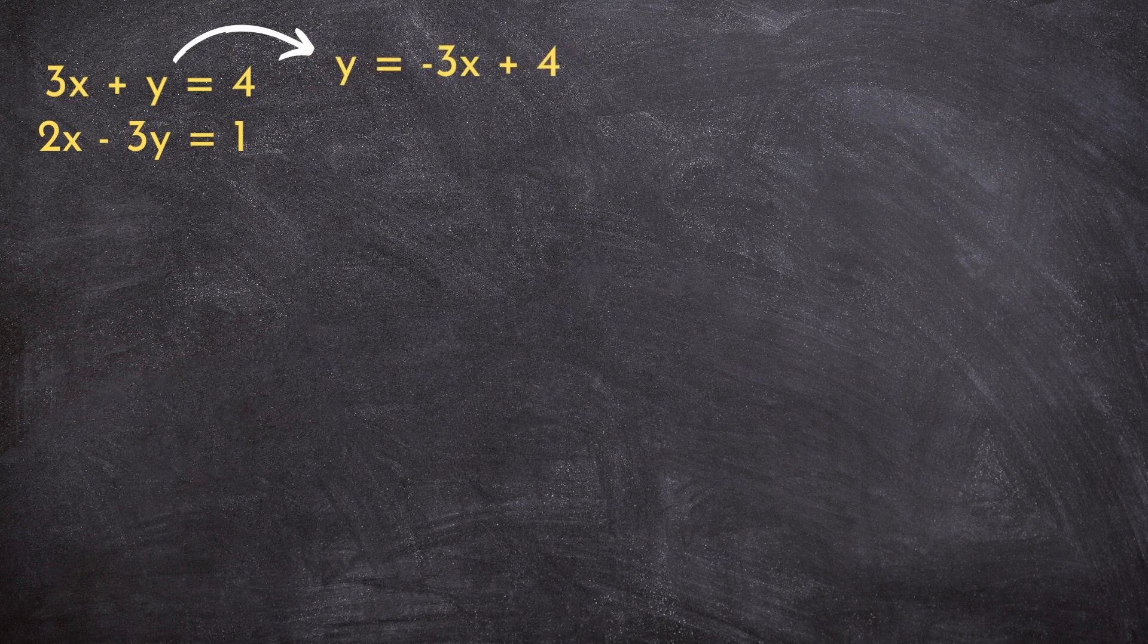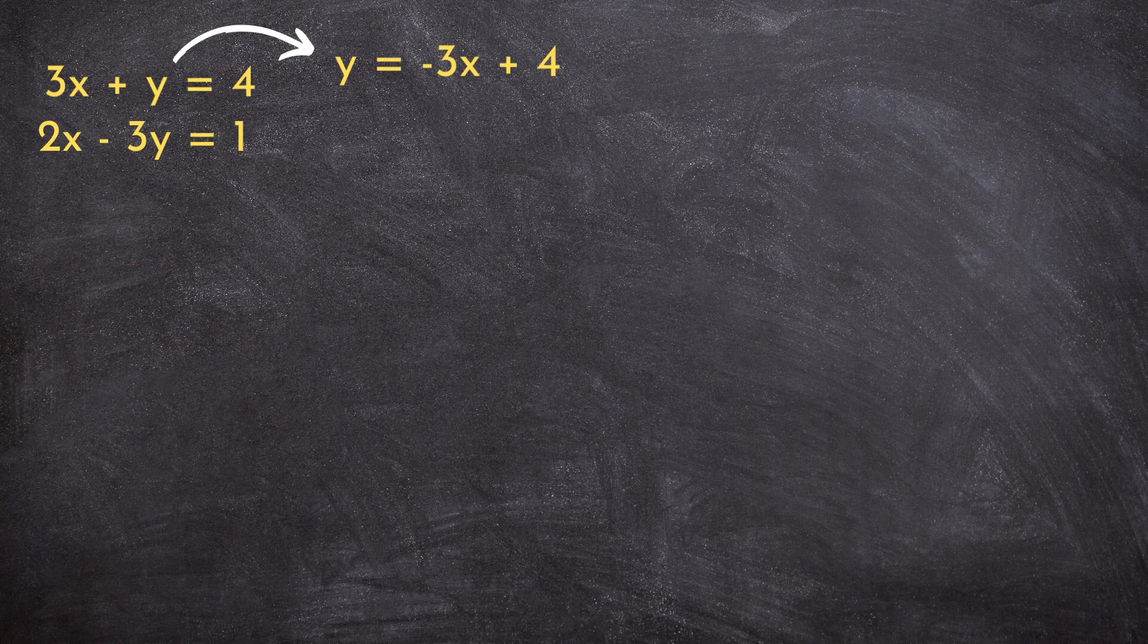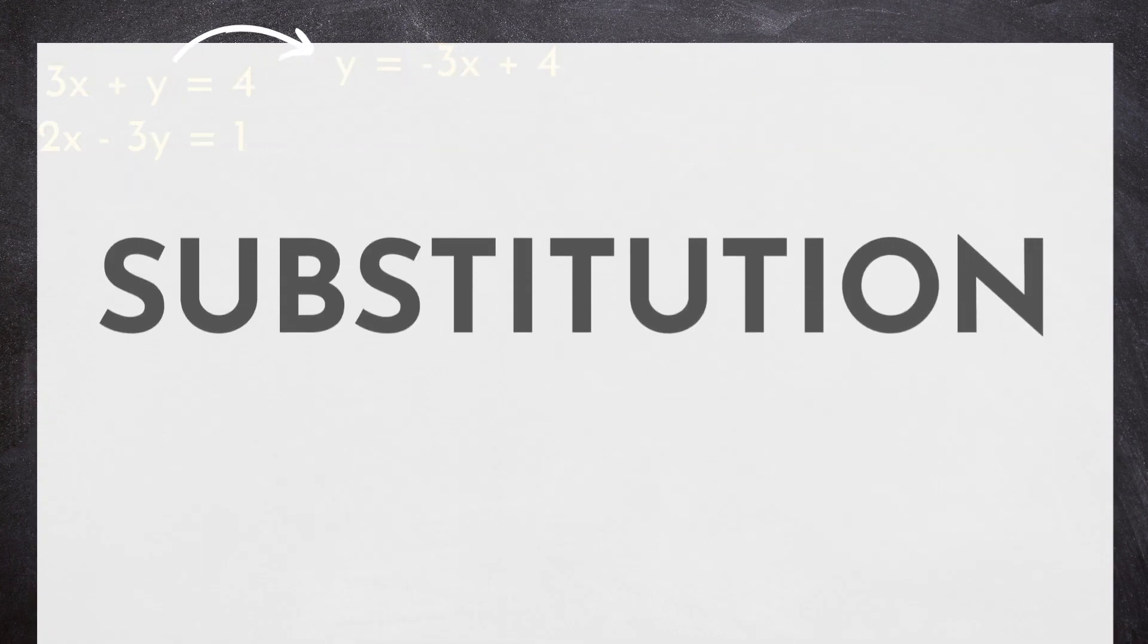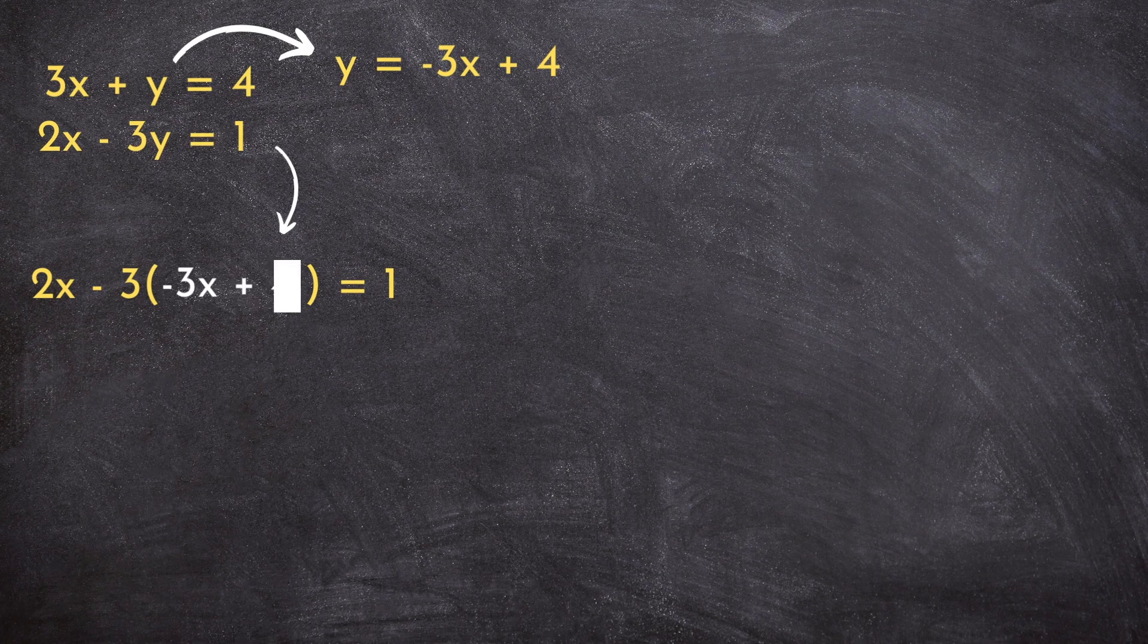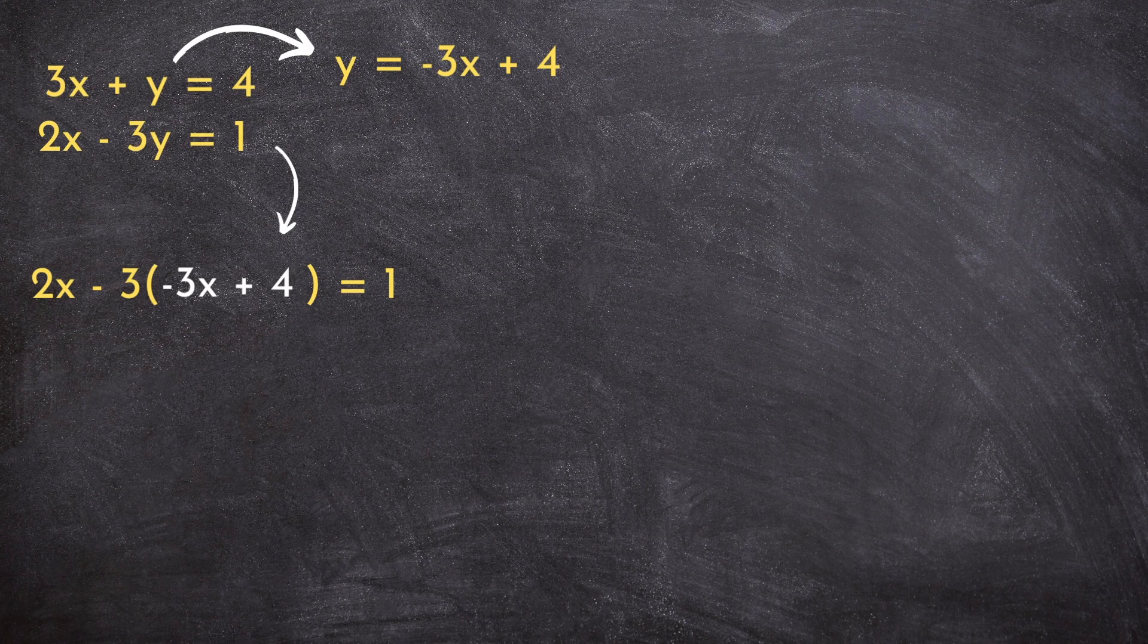So let's go ahead and start here by isolating y. We'll do that just by moving 3x over to the other side to get negative 3x plus 4. Remember that substitution tells us we can substitute an expression like negative 3x plus 4 into our other line wherever we see a y.